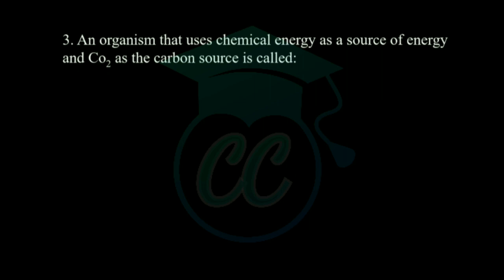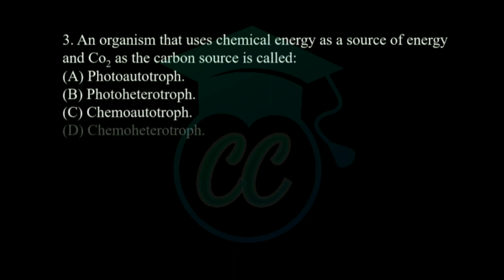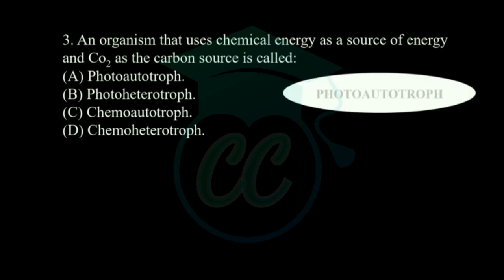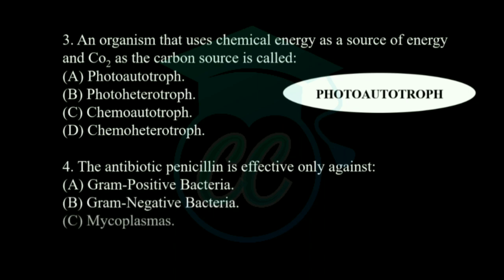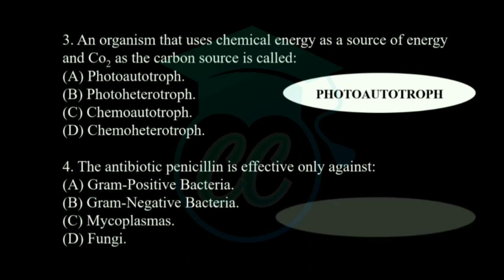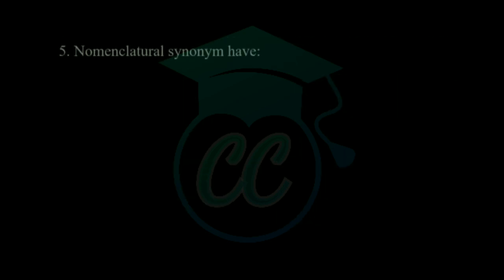Next question: an organism that uses chemical energy as a source of energy and carbon dioxide as a carbon source is called? Options: photo autotroph, photo heterotroph, chemo autotroph, and chemo heterotroph. The correct answer is chemo autotroph. Next question: the antibiotic penicillin is effective only against which of the following? Options: gram positive bacteria, gram negative bacteria, mycoplasma, and fungi. Penicillin is effective only against gram positive bacteria.